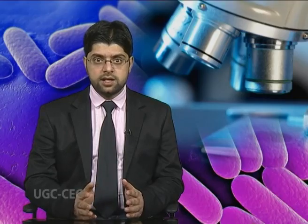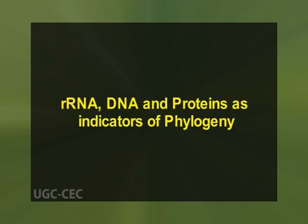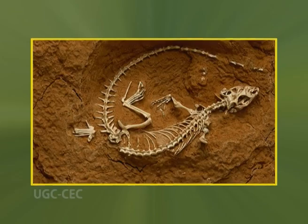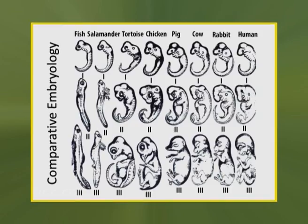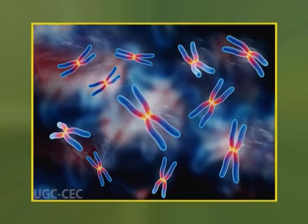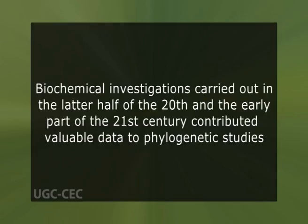Regarding rRNA, DNA and proteins as indicators of phylogeny — biologists who postulate phylogenies derive their most useful evidence from paleontology, comparative anatomy, comparative embryology and molecular genetics. Studies of the molecular structure of genes and of the geographic distribution of flora and fauna are also useful. Biochemical investigations carried out in the latter half of the 20th and early part of the 21st century contributed valuable data to phylogenetic studies.